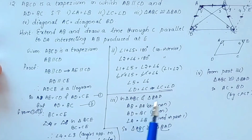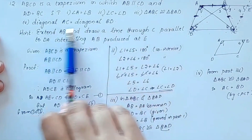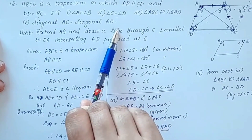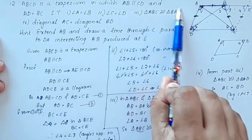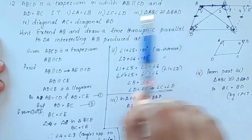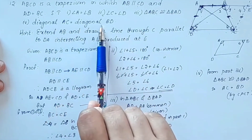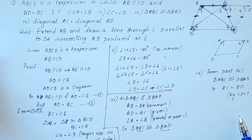AC is equal to BD. This completes the proof of all four parts of the question. Thank you.